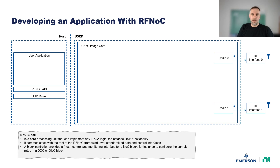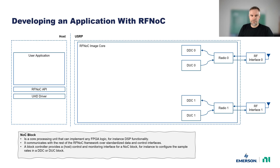First, we need two radio blocks, which mainly implement packetization of samples and act as gatekeeper to start transmission or reception at specific points in time. Secondly, we are only interested in a small portion of the real-time bandwidth, so we put sample rate conversion blocks for each radio. DDC implements down conversion while DUC implements up conversion. Finally, we are interested in observing the time domain signal, but in some cases we want to compute its frequency domain representation, so we put an FFT block.